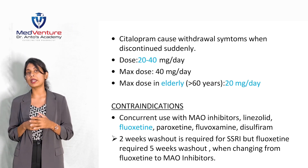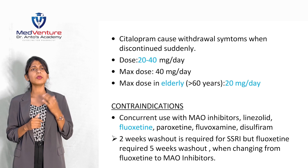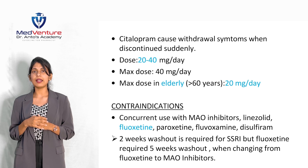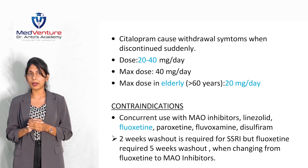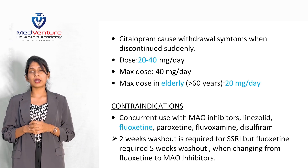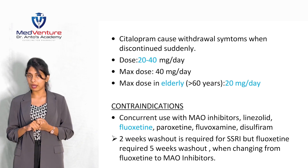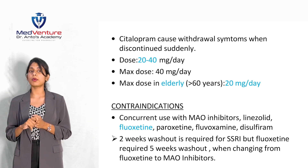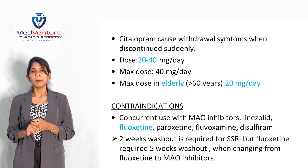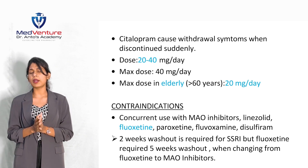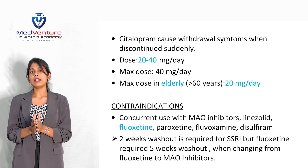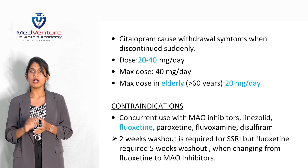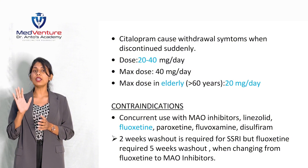The standard dose of citalopram is 20 to 40 mg per day, with a maximum dose of 40 mg per day. For elderly patients (60 years and above), the maximum dose is 20 mg per day. MAO inhibitors are contraindicated with citalopram, as are other SSRIs such as fluoxetine, paroxetine, and sertraline. Antidepressants generally require a washout period of a couple of weeks; fluoxetine requires a 5-week washout period.